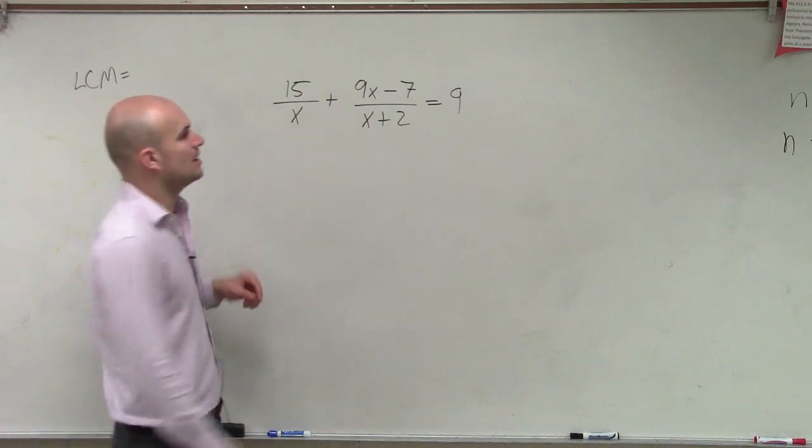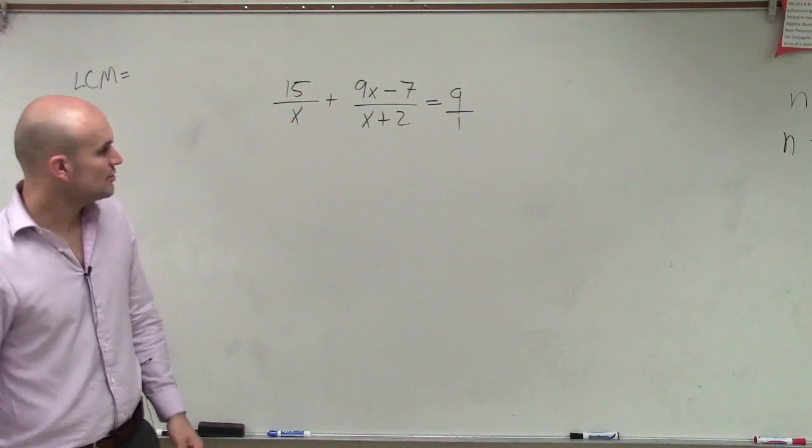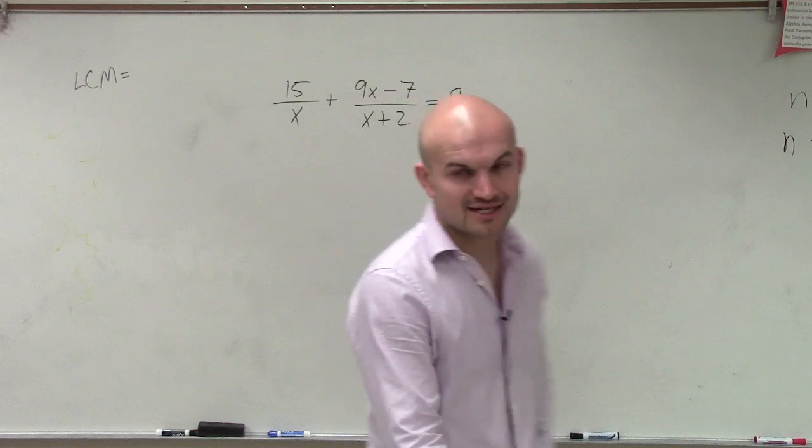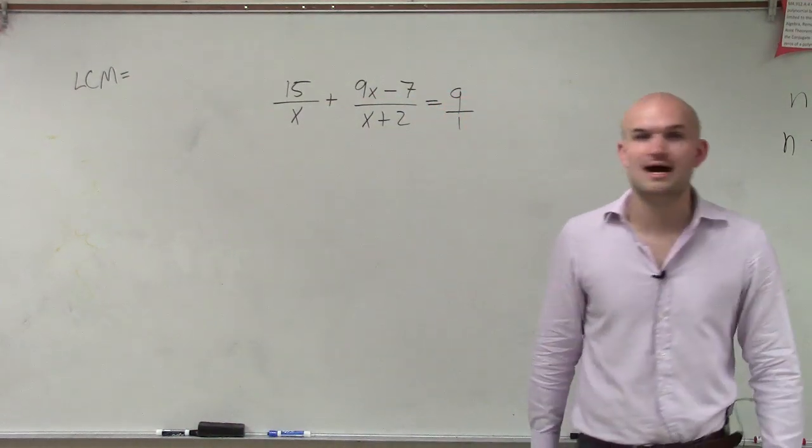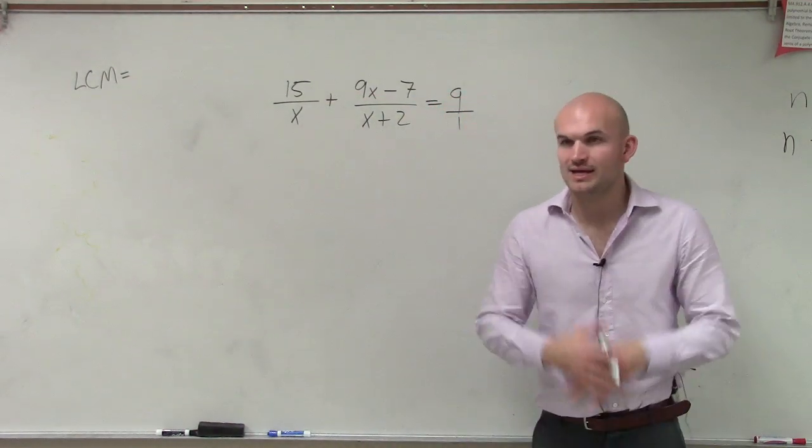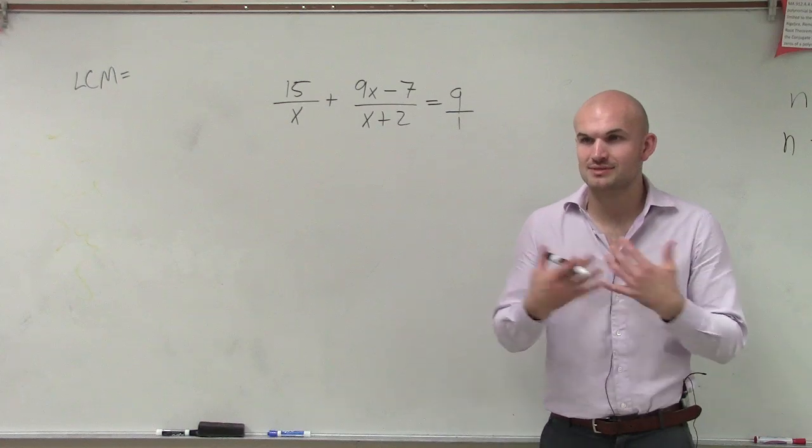So we look at right now, and you could rewrite this as a fraction if you like. We have three denominators of x, x plus 2, and 1. So the least common denominator or multiple is going to be x times x plus 2.